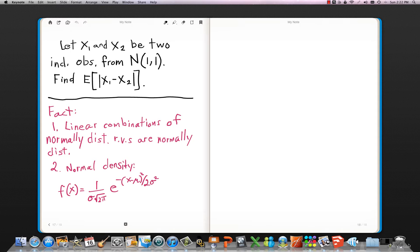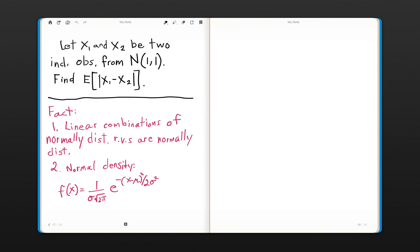Okay, so here's an interesting problem. I really like this one. This one's fun. Generally, these actuarial type problems require you to have a few tricks in your bag, and this is no different. We have two random variables, X1 and X2, that are independent observations from a normal distribution with mean 1 and variance 1. We'd like to find the expected value of the absolute value of X1 minus X2.